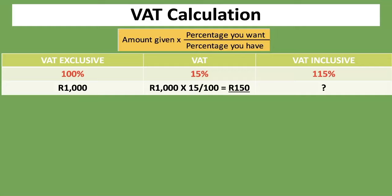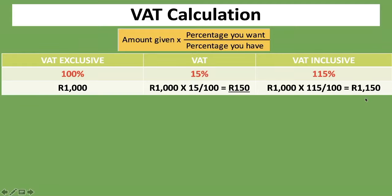Now, if we have to calculate the VAT Inclusive when we are given only VAT Exclusive, we take the 1,000 RAND and multiply it by 115%, and divide that by 100%. So it's 1,000 RAND times 115% divided by 100%, which gives us 1,150 RAND. Alternatively, if you already have VAT Exclusive and the VAT, you can just add the two together: 1,000 plus 150 RAND gives you 1,150 RAND.